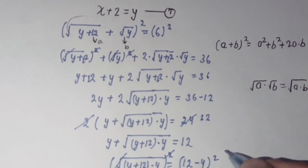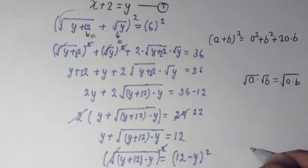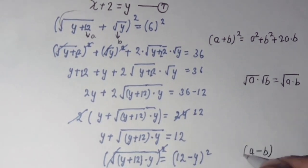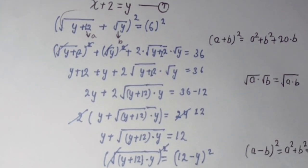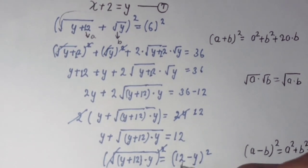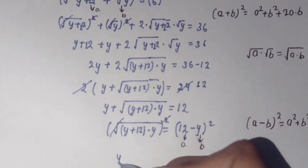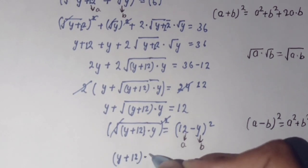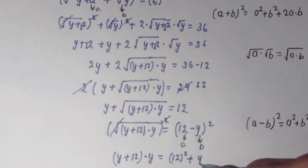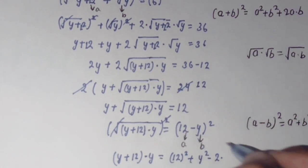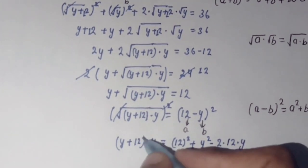Using (a - b)² = a² + b² - 2ab, squaring both sides gives y(y + 12) = 144 + y - 2·12·square root of y. Simplifying: y² + 12y on the left, and 144 + y² - 24·square root of y on the right.